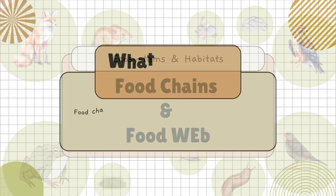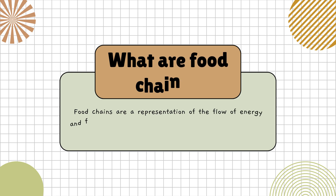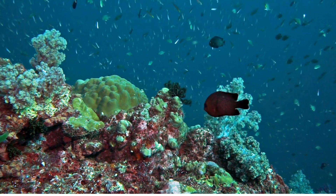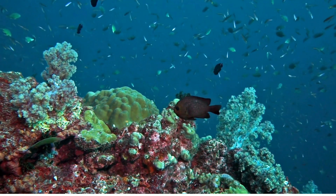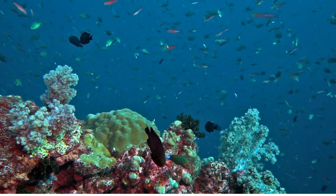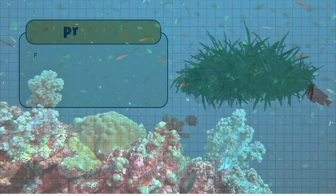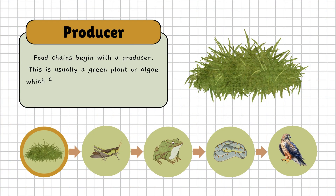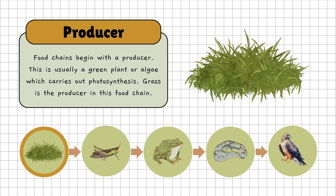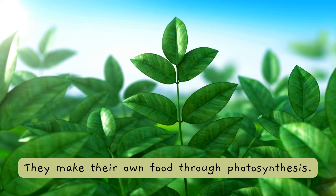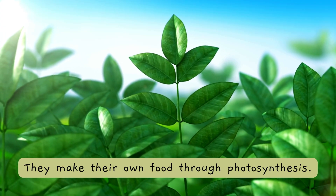So, what exactly is a food chain? Think of it as a map that shows how energy flows from one living thing to another in an ecosystem. It's all about who eats whom, starting from the bottom with our producers. Producers are usually green plants or algae, and they are the first step in every food chain. They make their own food through photosynthesis.